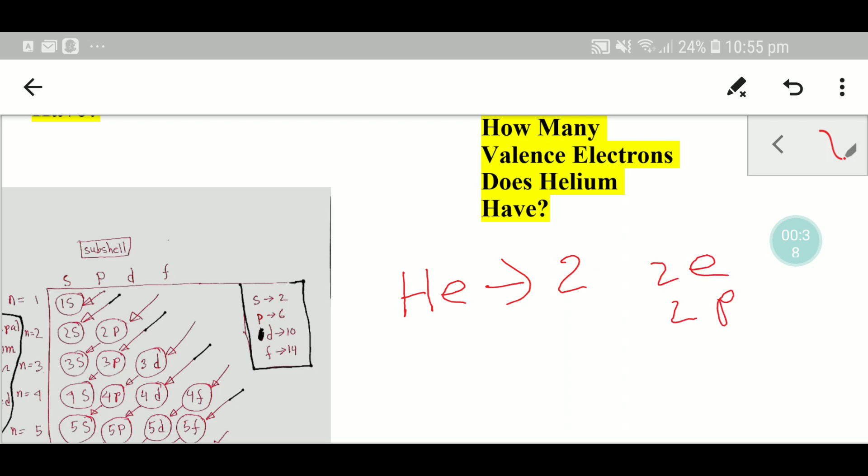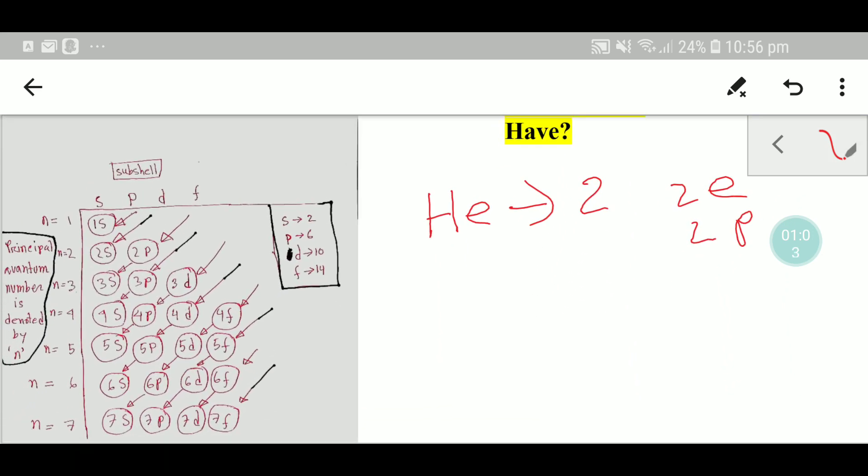As you know, the charge of a proton is +1 and the charge of an electron is -1. So +1 and -1 will cancel out each other and we'll get a neutral helium atom. Now we'll write the electronic configuration of helium.